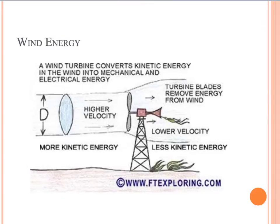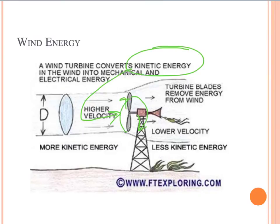Another type of alternative energy we talk about a lot is wind energy. Wind energy takes the kinetic energy from wind, which is a type of mechanical energy, and converts it into a non-mechanical type of energy. When wind goes into our wind turbine, it turns the turbine, and from that rotating turbine we convert the kinetic energy into electrical energy. So this rotating turbine is what helps to make electricity.